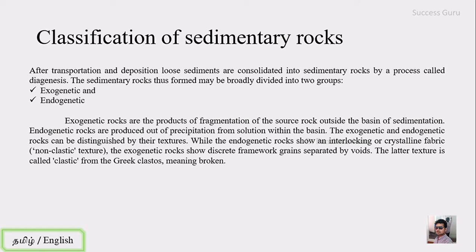The exogenetic and endogenetic rocks can be distinguished by their texture. The endogenetic rock shows interlocking or cushion fabric, also known as non-clastic texture. Since it is formed by precipitation, there will be no free space or voids between the grains — the minerals form as interlocking. The exogenetic rock, having been transported and redeposited, contains grains and voids; the grains are called framework grains. This texture is known as clastic texture, from the Greek term 'clasto' meaning broken.